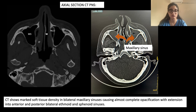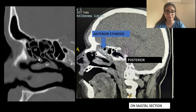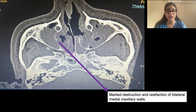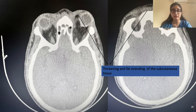On CT imaging, we could see involvement of bilateral maxillary sinus with soft tissue density in bilateral maxillary sinuses. There was also involvement of ethmoid and sphenoid sinuses. A sagittal image shows involvement of the ethmoid sinuses. There was marked destruction and rarefaction of the middle maxillary walls. There was also rarefaction of the ethmoid sinus walls. Rarefaction basically means thinning of bones.